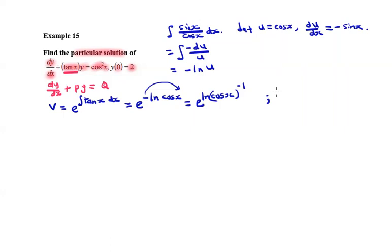One of the important properties of indices: e raised to power ln f(x) equals f(x) itself. Therefore, e raised to ln cos x to the negative 1 equals cos x to the power negative 1. This equals 1 divided by cos x.